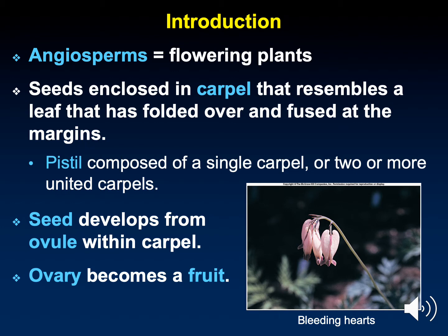This refers to the fact that seeds are enclosed in a carpel, which is a modified fold-over leaf found at the base of a flower — more specifically, at the base of the pistil, which is the female part of a flower. Seeds develop from an ovule inside the carpel. As that ovule matures into an ovary, it is now officially a fruit.